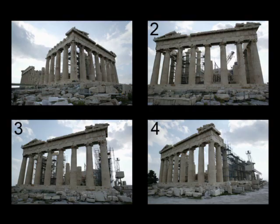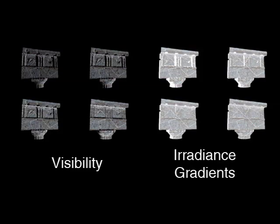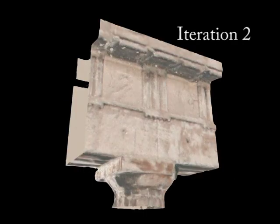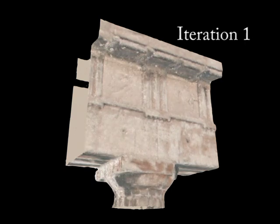This process is repeated for all photographs viewing the voxel, and the reflectance properties are averaged together, weighted according to visibility and irradiance gradients. Once all voxels have been updated, the process is repeated to account for the resulting changes in the indirect illumination, with a complete process requiring approximately 10 minutes of computation per voxel.